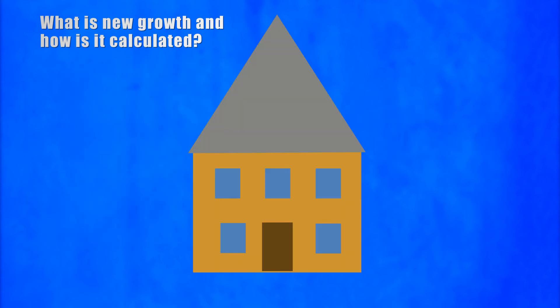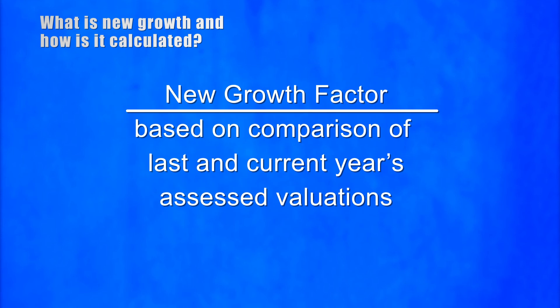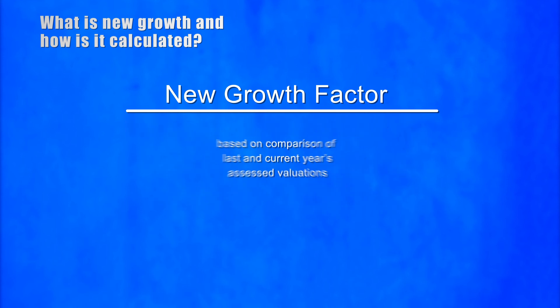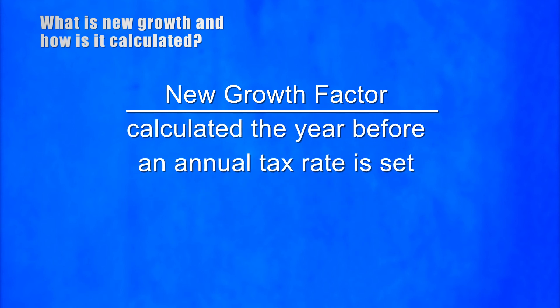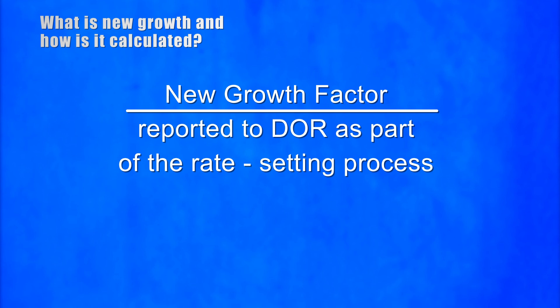In addition, the factor is not adjusted for decreases in the tax base due to demolition, fire, or other reasons — it is based on increases only. Since the new growth factor is based on a comparison of last year and this year's assessed valuations, it is calculated after the assessors have set all values for the year, just before the annual tax rate is set. At that time, it is reported to the Department of Revenue as part of the tax rate setting process.